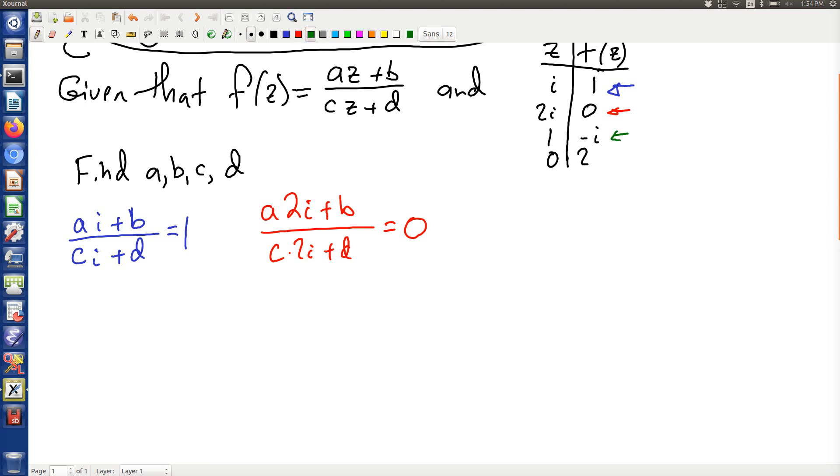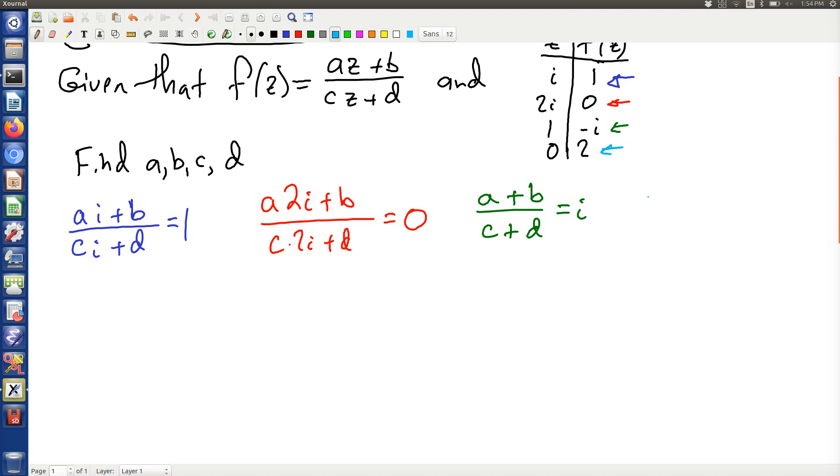Here's the next one. The next one says that A plus B over C plus D is equal to i. And the last one says A times 0 plus B over C times 0 plus D is equal to 2.